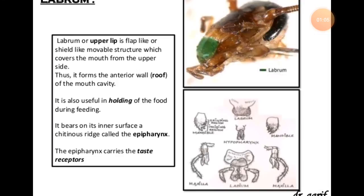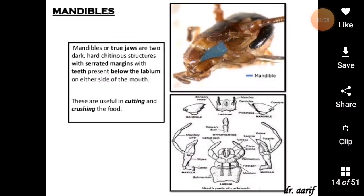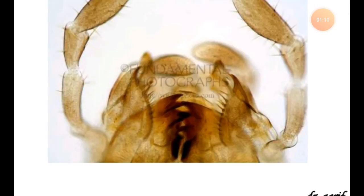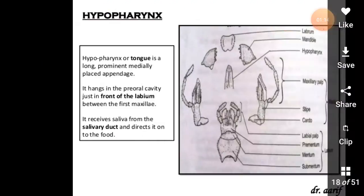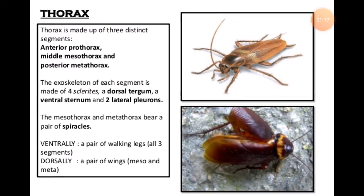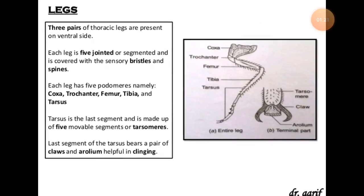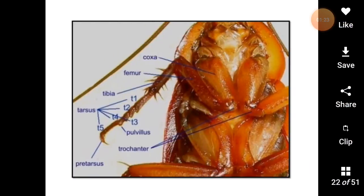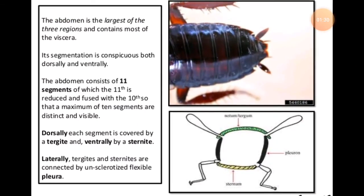You will have also seen parts like the labrum, mandibles, maxilla, labium, and the hypopharynx, thorax, as well as their wings — types of wings — and how their legs work.